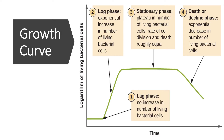This is the bacterial growth curve. It shows: first, the lag phase, in which there is no increase in number of bacteria although there is vigorous metabolic activity; second, the log or exponential phase, in which there is rapid increase in cell number due to cell division; third, the stationary phase, which causes a plateau in the curve where the rate of cell division and rate of cell death are equal; and fourth, the death or declining phase, in which the bacterial cell death rate is greater than the growth rate.